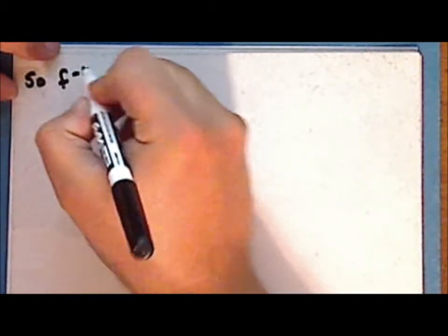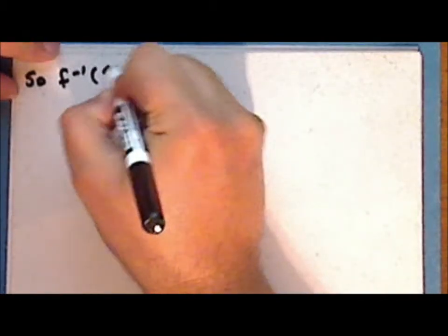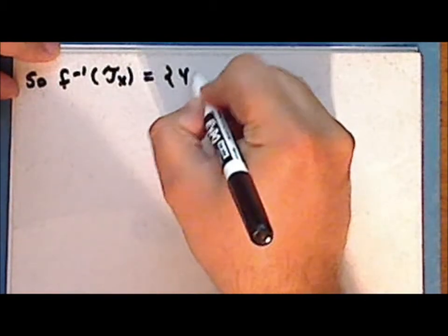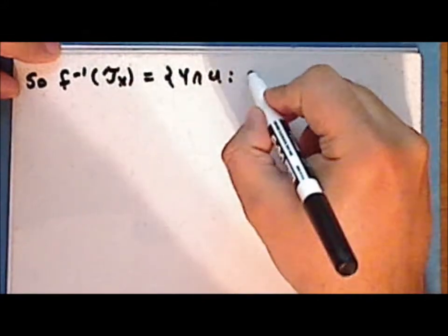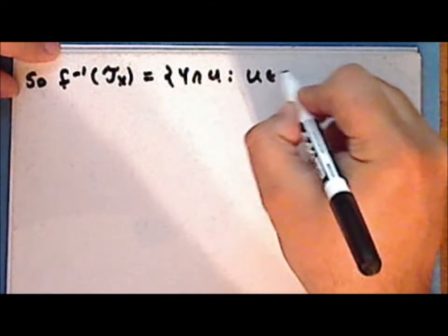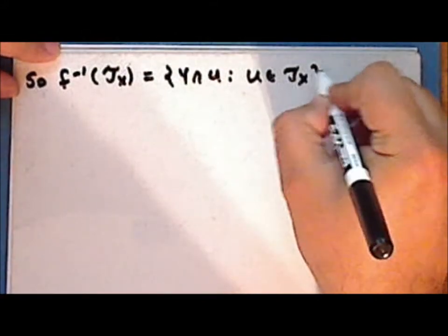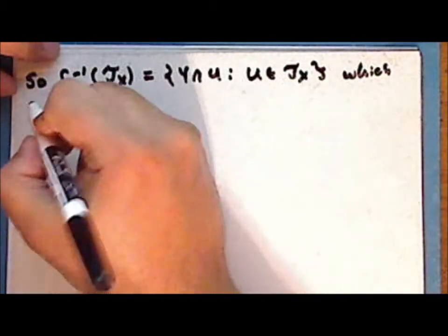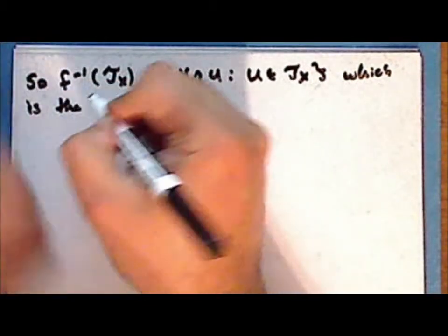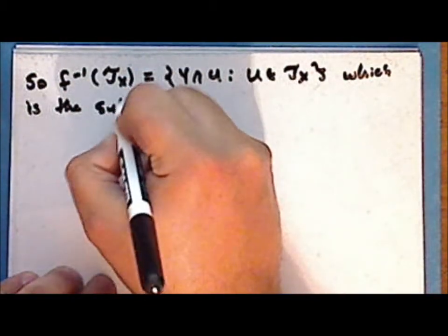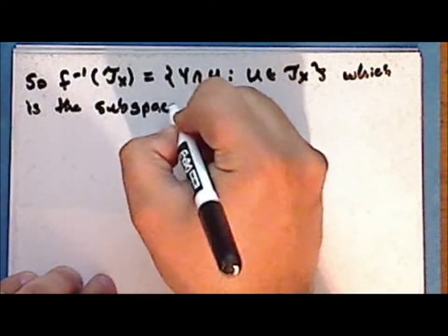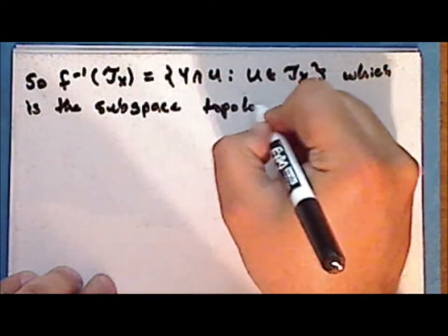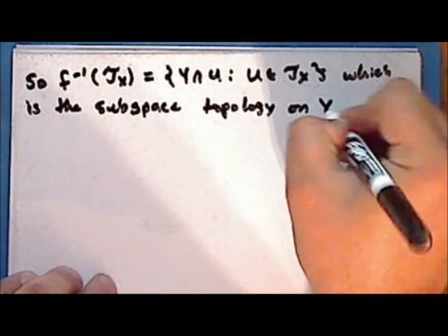And so the inverse image of the topology on x is the set of all intersections of y with u, where u is in the topology on x — which is the subspace topology on y. Notice that if y is a subspace of x, then the function mapping y into x defined by f of y equals y is continuous.